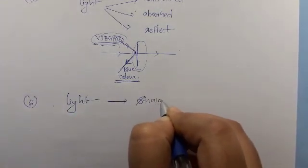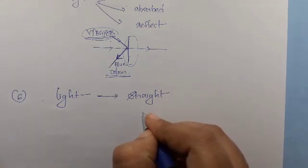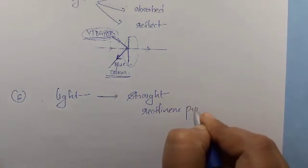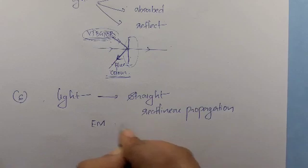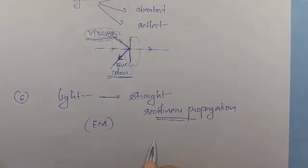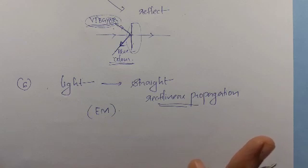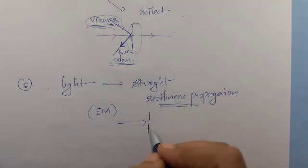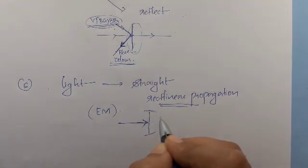The sixth property: light always travels in a straight line. This is called rectilinear propagation of light. Because light travels in straight lines, opaque objects placed in the path of light cast sharp shadows.